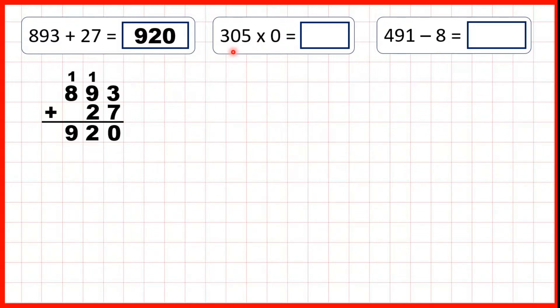305 times 0. Any number times 0 is 0, so that's our answer.